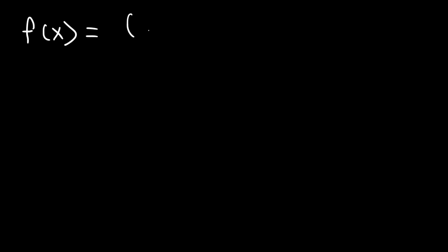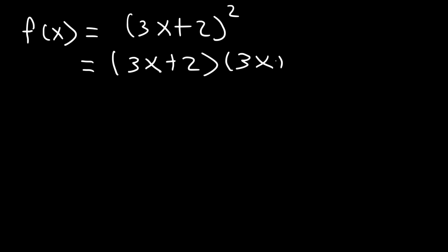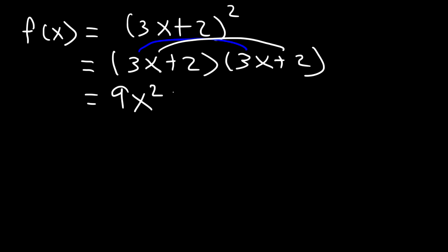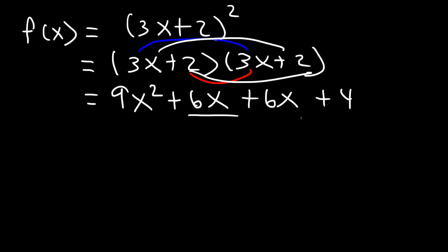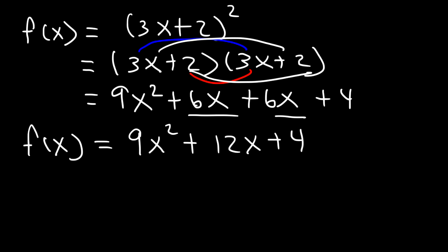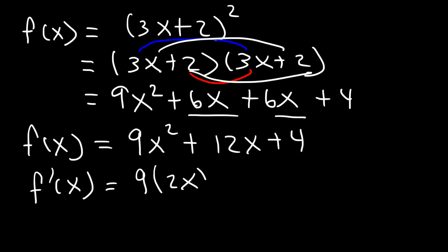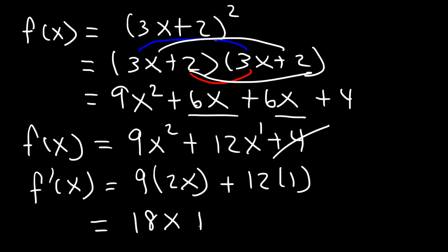Now let's say f of x is equal to the quantity 3x plus 2, squared. What's the first derivative of this function? If you're not familiar with the chain rule, it's best to expand this expression. We write it twice since it's squared, and FOIL: 3x times 3x is 9x squared, 3x times 2 is 6x, 2 times 3x is also 6x, and 2 times 2 is 4. Combining like terms, f of x equals 9x squared plus 12x plus 4. Now it's easy to differentiate: the derivative of x squared is 2x, the derivative of x is 1, and the constant is 0. So f prime of x is 18x plus 12.